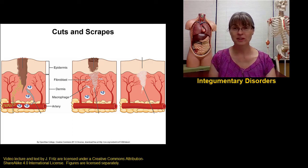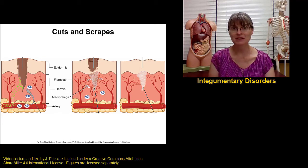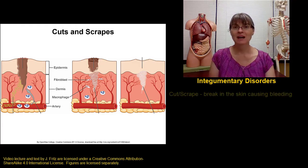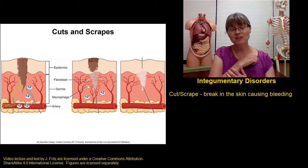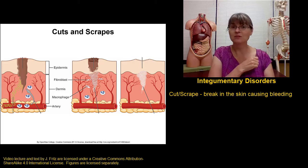Let's talk about some disorders of the integumentary system. Let's start with one so common that I suspect everybody has experienced at one point or another in their life, and that would be a cut or a scrape. A cut or a scrape damages the skin — it damages the epidermis and into the dermis, where it damages blood vessels and causes bleeding.